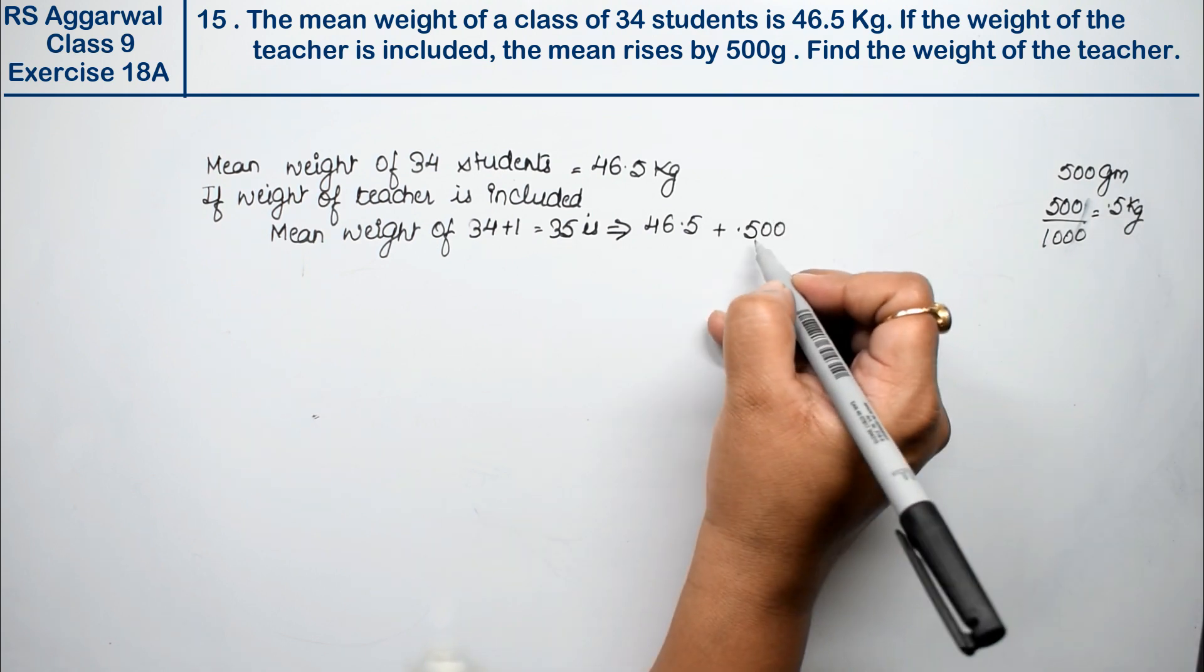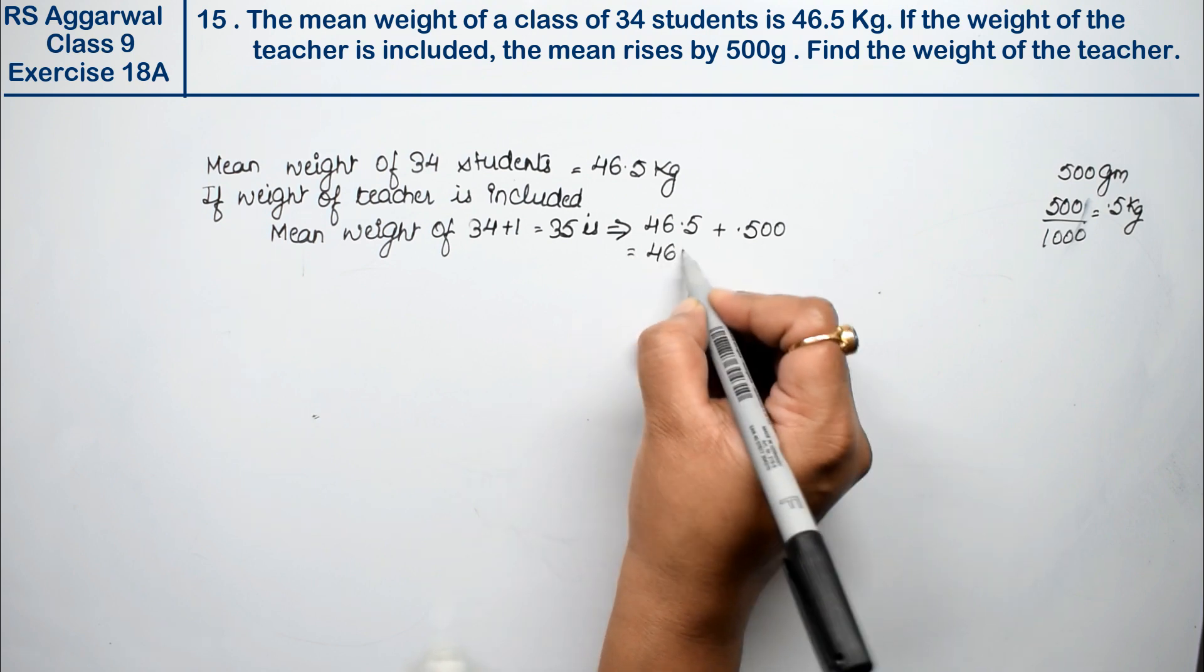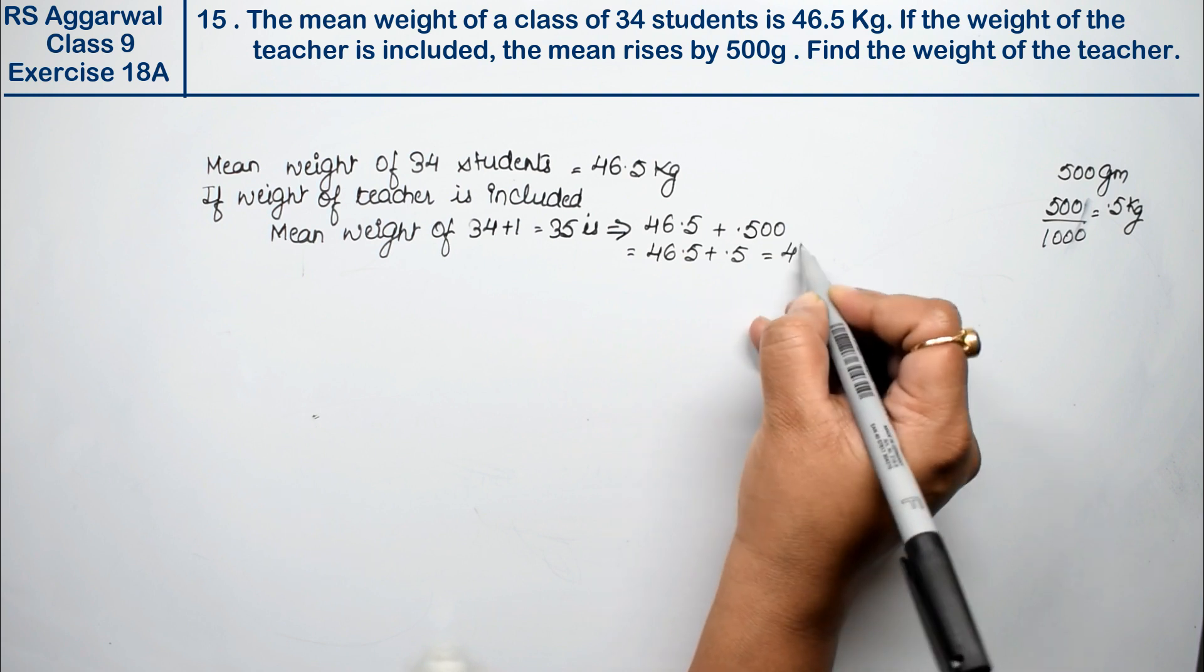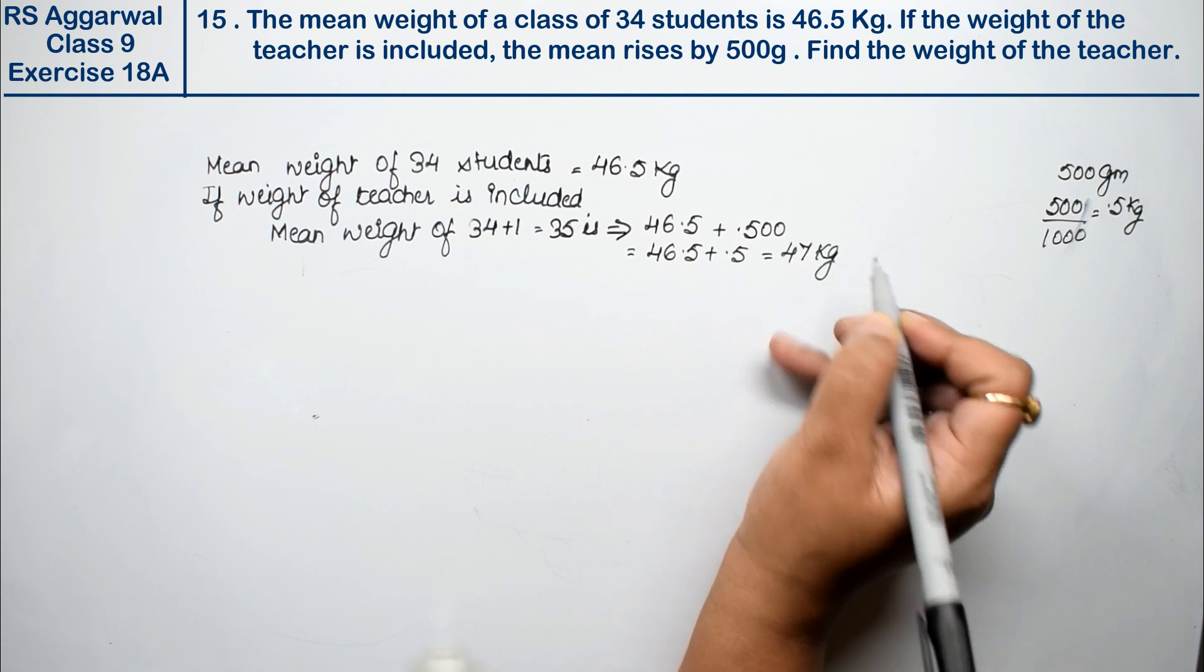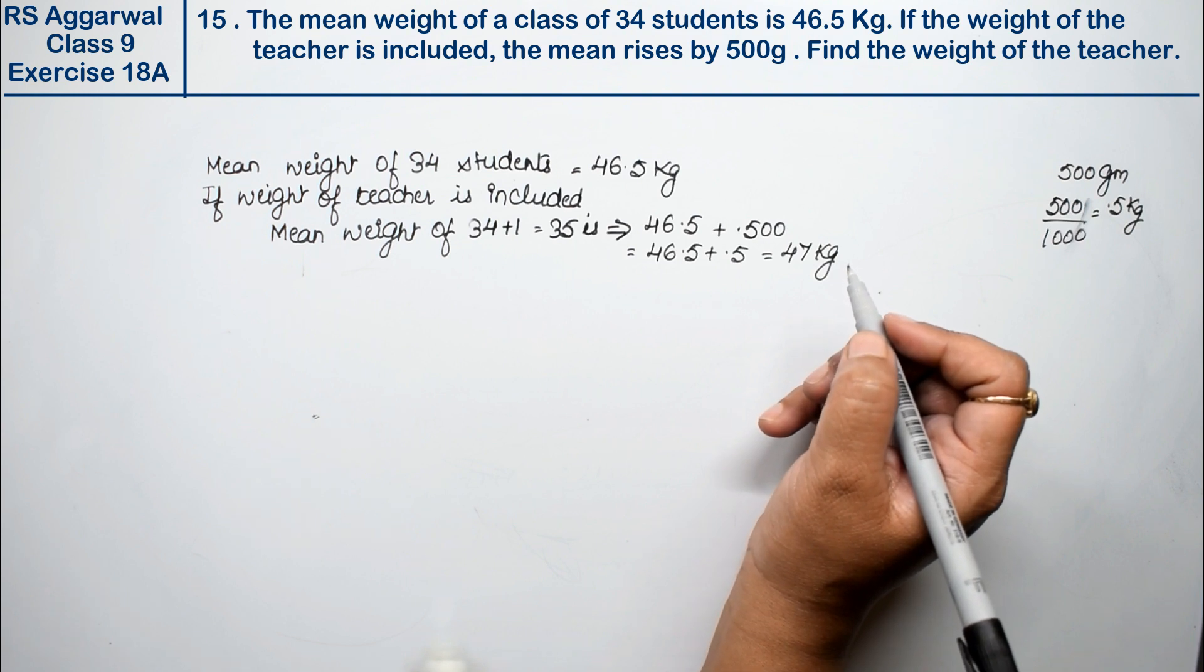So here we add 0.5 kg. How much will it be? 46.5 plus 0.5, that is 47 kg. Right friends? Now we have to take the teacher's weight. How much will it be?